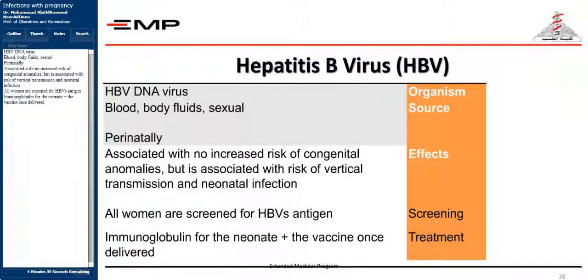Hepatitis B is a DNA virus transmitted through blood, body fluids, sexual contact, and perinatally. It is associated with no increased risk of congenital anomalies, but is associated with risk of vertical transmission and neonatal infection. All women are screened for Hepatitis B surface antigen. Treatment includes immunoglobulin for the neonate and the vaccine once delivered.